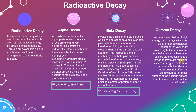Gamma decay involves the emission of high energy gamma rays, which are electromagnetic radiation of very short wavelength. Gamma rays are emitted when a nucleus in an excited state transitions to a lower energy state, releasing excess energy in the form of gamma radiation. Gamma decay does not affect the atomic number or mass number of the nucleus but can lead to a more stable nuclear configuration.